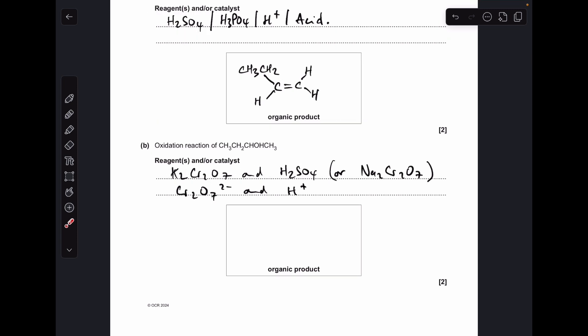Oxidation reaction of an alcohol, so the reagent is potassium dichromate six and sulfuric acid, or you could use sodium dichromate six and the acid, or you could just specify the ions so it's Cr₂O₇²⁻ and H⁺. This is a secondary alcohol so it's going to be oxidized to a ketone, which means the organic product looks like that.